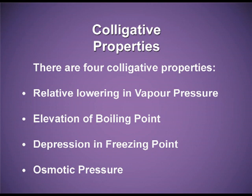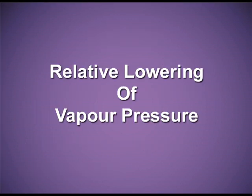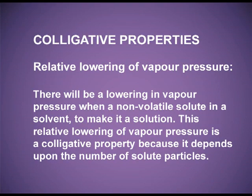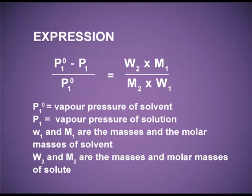The first colligative property is relative lowering of vapour pressure. I have explained that there will be a lowering in the vapour pressure when I mix a non-volatile solute in a solvent to make it a solution. This relative lowering of vapour pressure is a colligative property because it depends upon the number of the solute particles. Mathematically, (P°₁ - P₁) / P°₁ = (W₂ × M₁) / (M₂ × W₁).